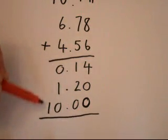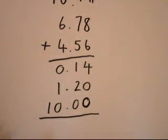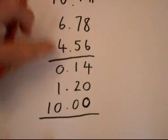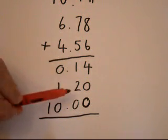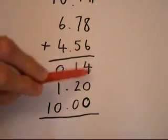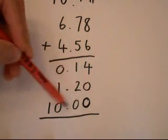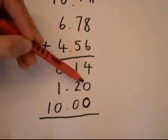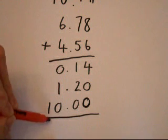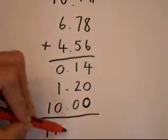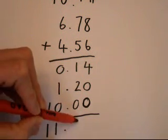OK, the final step now is just to add up all those additions I did of each place value. So I've got 10 plus £1.20 plus this 14 pence. OK, so I've got 10, 11.20, 11.34. OK, so I can put that down here. 11.34.